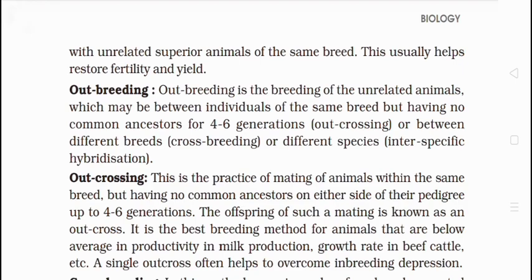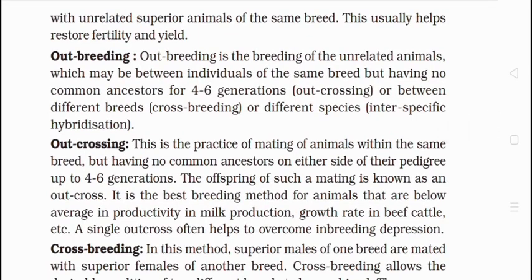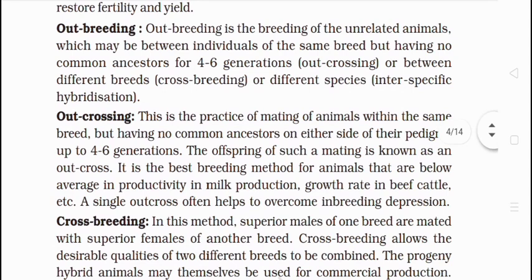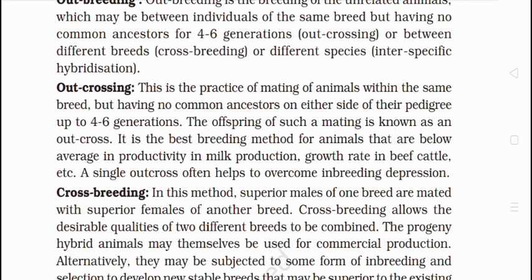Outbreeding is the breeding of unrelated animals, either between individuals of the same breed having no common ancestor for 4 to 6 generations, or between different breeds. There are three types of outbreeding: outcrossing, crossbreeding, and interspecific hybridization. Outcrossing is the mating of animals within the same breed but having no common ancestor for 4 to 6 generations.